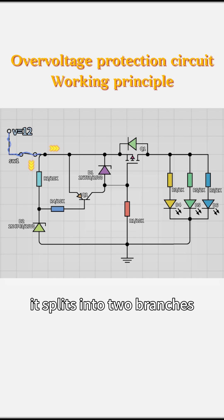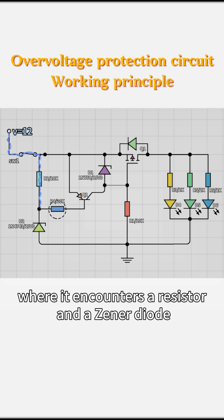When 12V is input, it splits into two branches. First, let's look at the first branch. The 12V reaches here, where it encounters a resistor and a Zener diode.